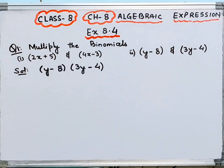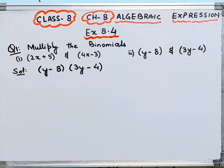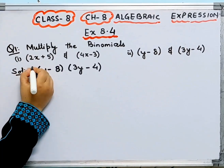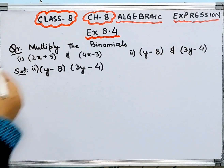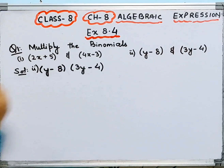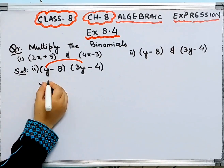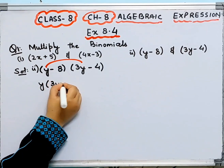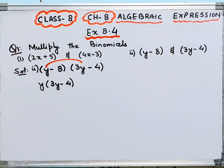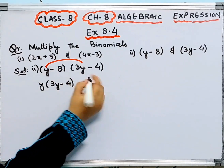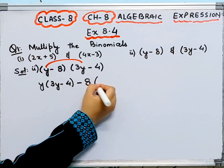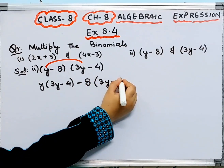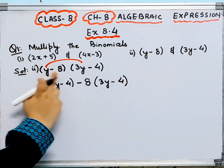Now let's move on to the second part. In the second part, you have y minus 8, and you will multiply it with 3y minus 4. First, you will multiply y by the whole expression 3y minus 4. So this will be y into 3y minus 4. Now, this is minus 8 here.